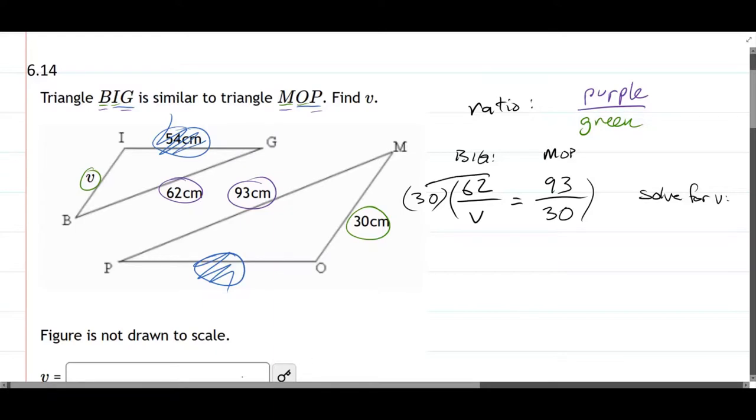And this 30 is on both sides, the left and the right. So on the left side, we have 30 times 62, divided by V, equals the 30 and the 30 cancel, and we just have 93.